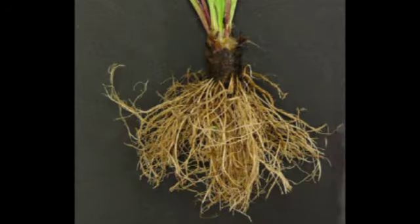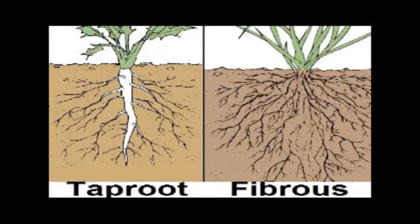Fibrous root: in this type of roots, all the roots arise from the base of the stem at one point. A fibrous root tends to taper downwards. Examples of fibrous roots are cereals, grasses and banana. We can differentiate tap root and fibrous roots without uprooting the plant.